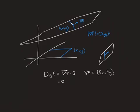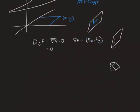Actually, that's not quite true. It could be pointing in the direction of maximum ascent, or it could be pointing in the direction of maximum descent. Both of those would be perpendicular to the vectors that are tangent to the level curves. However, if you look at the definition of the gradient vector, it's clear that it points in the direction of maximum ascent.